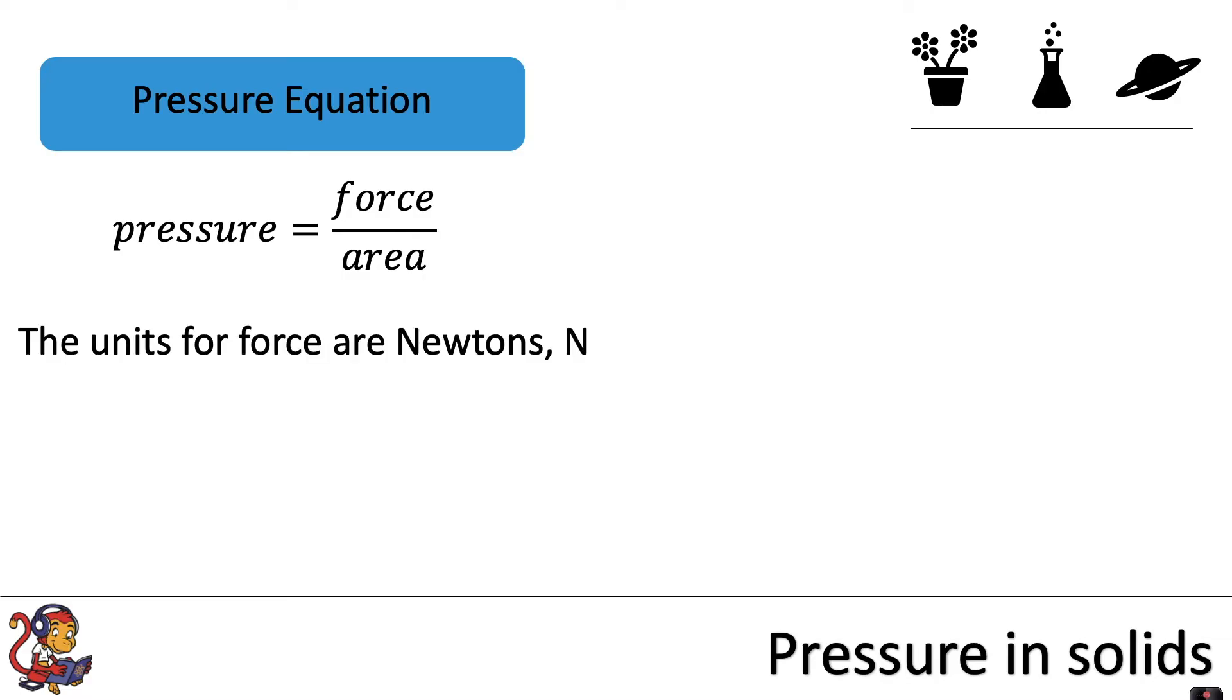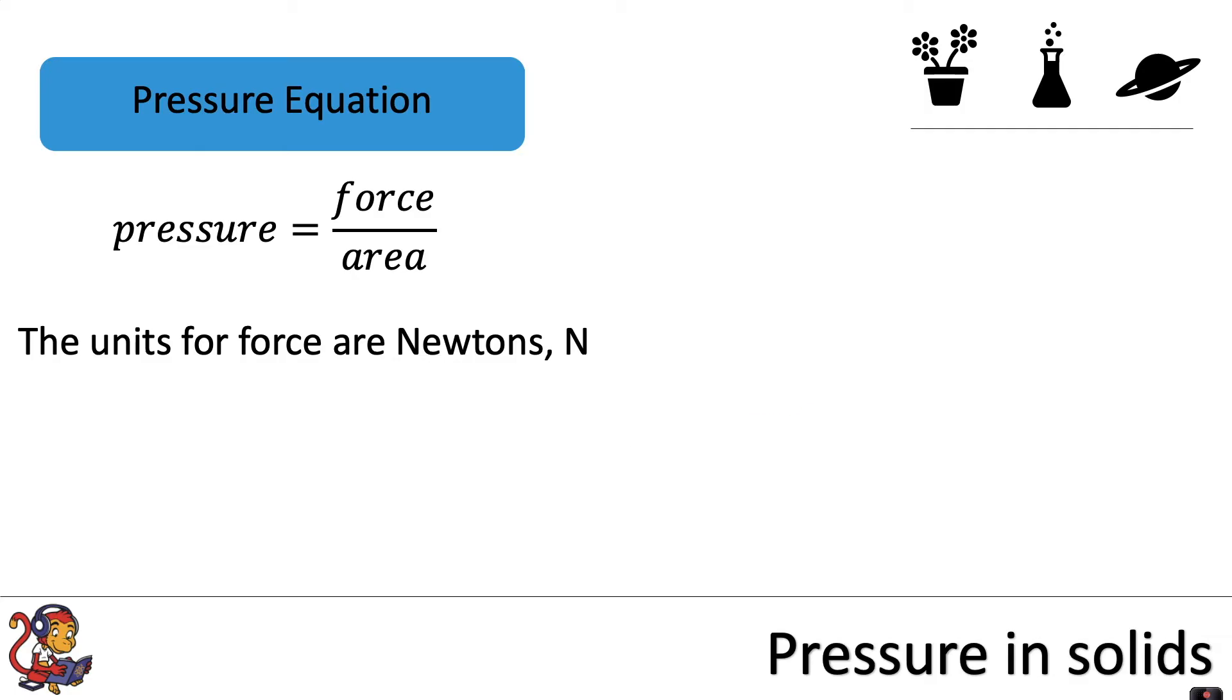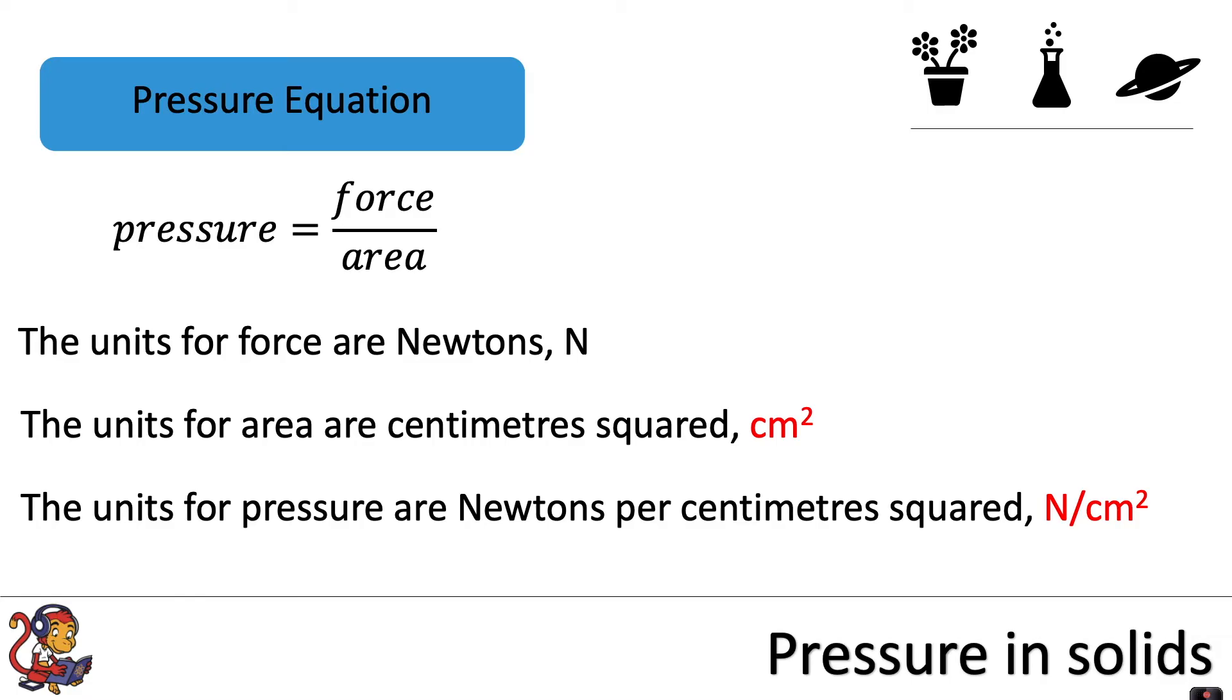The units for force are newtons. The units for area are meters squared, so therefore the units for pressure are newtons per meter squared. If you're calculating pressure at GCSE, you would absolutely need to make sure that you convert any units to make them into these standard units. However, when you do experiments, you may well be measuring the area in centimeters squared. If you have trouble converting that to meters squared, you can just keep it like that, and then the units for pressure will this time be newtons per centimeter squared.